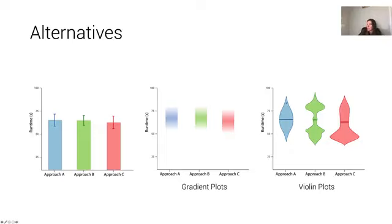For example, here we can see that the mean might be a pretty good reflection of approach A, but approach C is highly skewed towards lower run times.